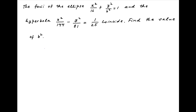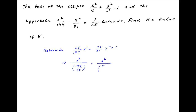The equation of the hyperbola can be written as (25/144)x² − (25/81)y² = 1. This can be rewritten as x²/(144/25) − y²/(81/25) = 1, which is also written as x²/(12/5)² − y²/(9/5)² = 1.